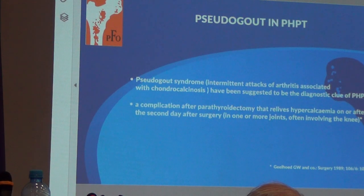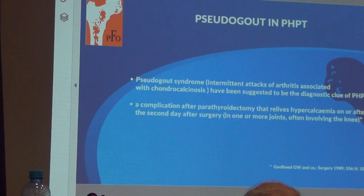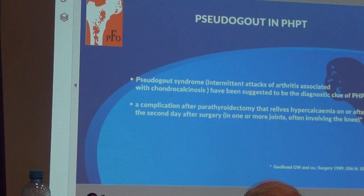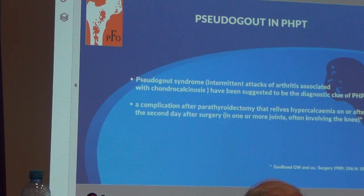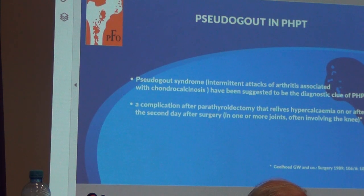The next manifestation is pseudogout. We see two forms of pseudogout. One is the pseudogout symptom seen as intermittent attacks of arthritis associated with chondrocalcinosis, which has been suggested as a diagnostic clue for hyperparathyroidism. Another form is a complication of parathyroidectomy that relieves hypercalcemia, occurring on or after the second day after surgery, in one or more joints, often involving the knee joint.